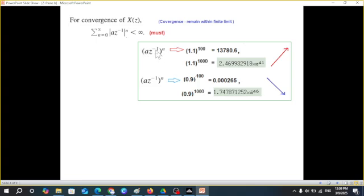For az^(-1), if we take it to be greater than 1, that is 1.1 or 1.01, and take some power. If we take 100, the value is 13780. If we increase the power, you can see 2.46 times 10^41. And if this value goes to infinity, obviously this is gradually increasing and it will go to infinity. But if this value is less than 1, let's say for example 0.9, then with the increase in power it is gradually decreasing. So 0.00265, here 1.7 times 10^(-46). And when we go to infinity, it will be 0. That means here it is converging when the value is less than 1. But when the value is greater than 1, then it is not converging. Keep this in mind.